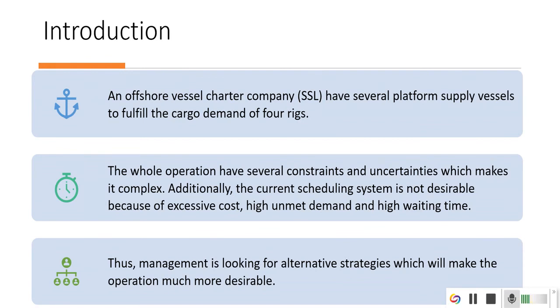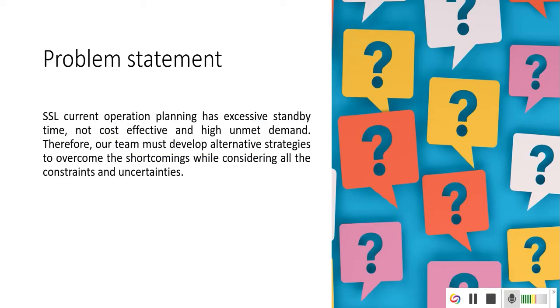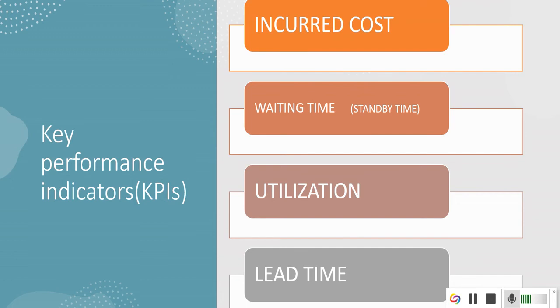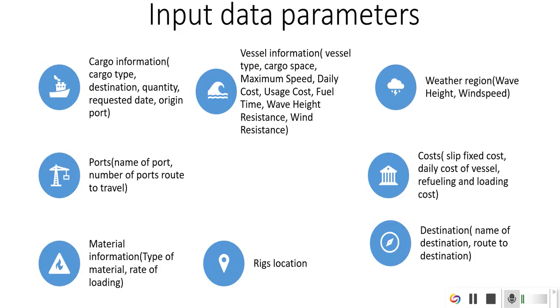For the introduction, there is an offshore vessel company that performs several supply vessels to fulfill the cargo demand of four rigs, and the whole operation has several constraints and uncertainties which makes it very complex. The decision makers inside the company want to overcome these shortcomings while considering all the constraints and uncertainties and build a cost-effective solution. Their key performance indicators are cost, waiting time, utilization, and lead time.